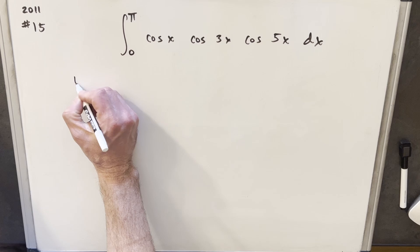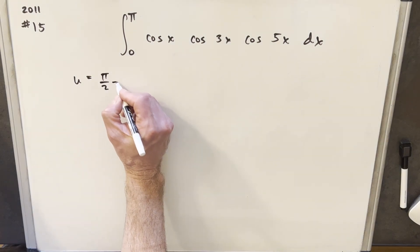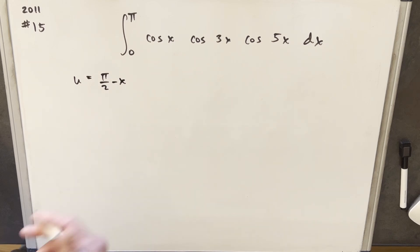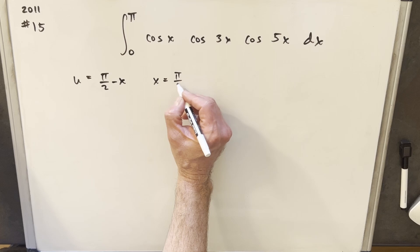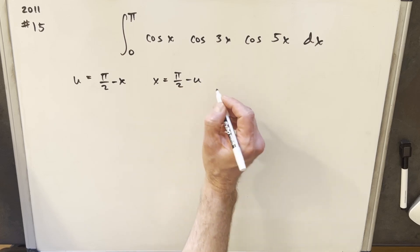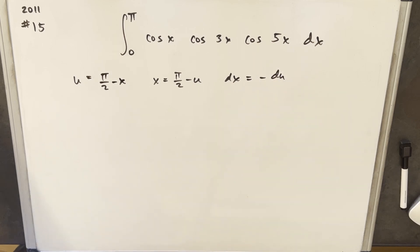So I started with a u substitution, and what I did was u equals pi over 2 minus x. The reason I did that is because it's going to allow us to use the complementary angle formula and set this up pretty nice. So with this, we can just rearrange, and we can also get a value for x. So x is going to be pi over 2 minus u, and we'll just get our dx value, which is going to be minus du.